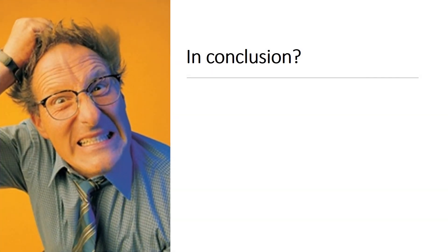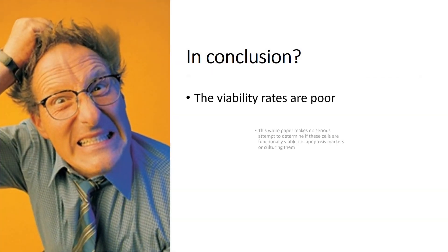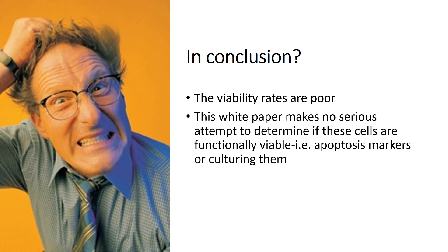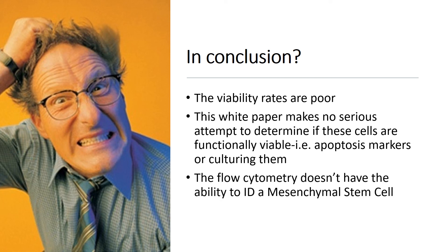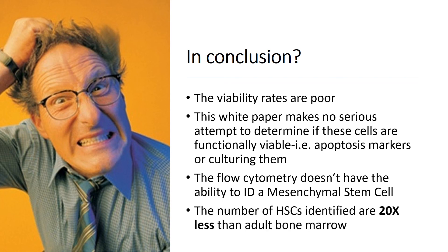In conclusion, the viability rates are poor. The white paper makes no serious attempt to determine if these cells are functionally viable. The flow cytometry doesn't have the ability to identify a mesenchymal stem cell because it was done incorrectly, certainly not in accordance with the paper they referenced. And the number of hematopoietic stem cells identified is about 20% less than adult bone marrow. Thanks so much for watching. Have a great day.